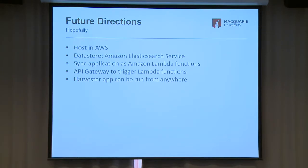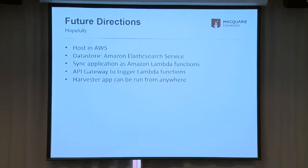Future directions: at the moment it's a service hosted locally with no external endpoint currently available — I'm working on that. I'd like to host it in AWS so it's open to everybody more easily. For the data store, I'd like to run an Amazon Elasticsearch service, run the application as Lambda functions — since there's no state involved apart from what it puts into the Elasticsearch data store — and then have an API gateway on AWS pointing to the Lambda functions, which can accept the preview, changes, orphan, and harvester requests. The harvester can be run from anywhere as long as it has access to the internet and the data store.